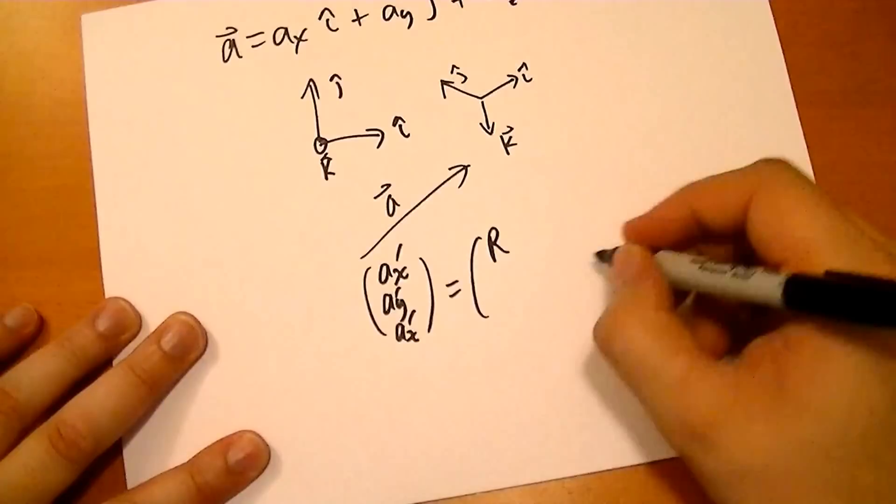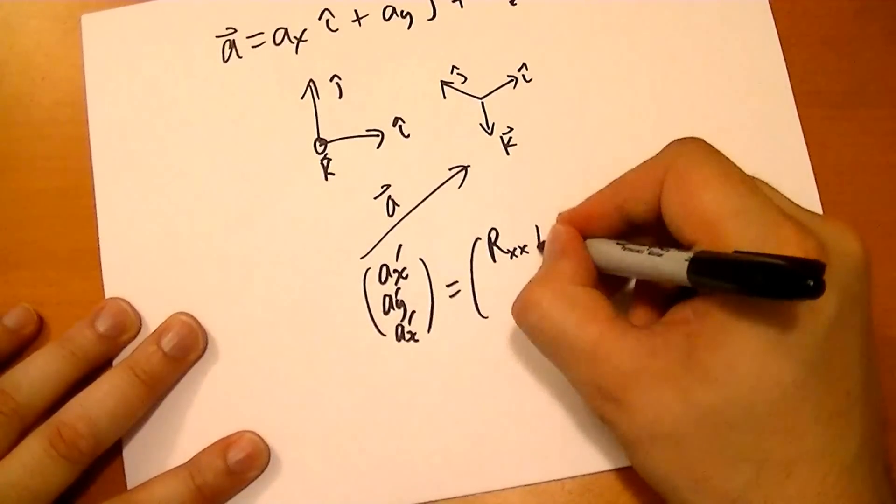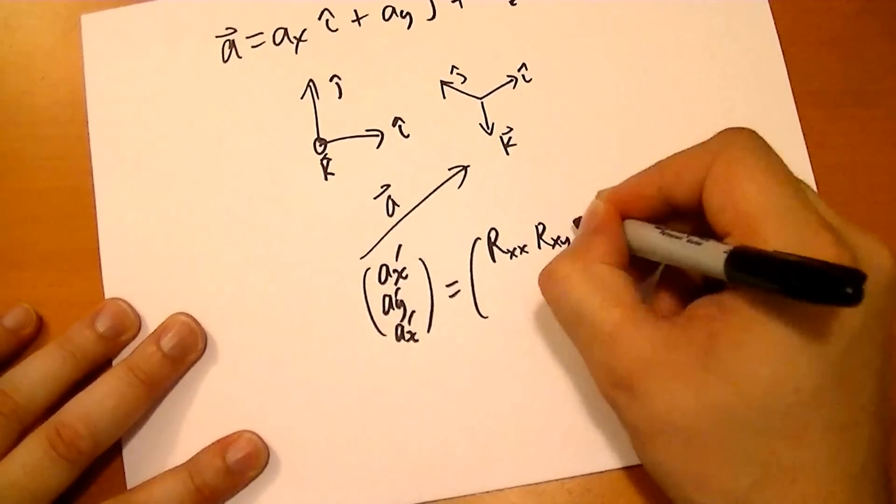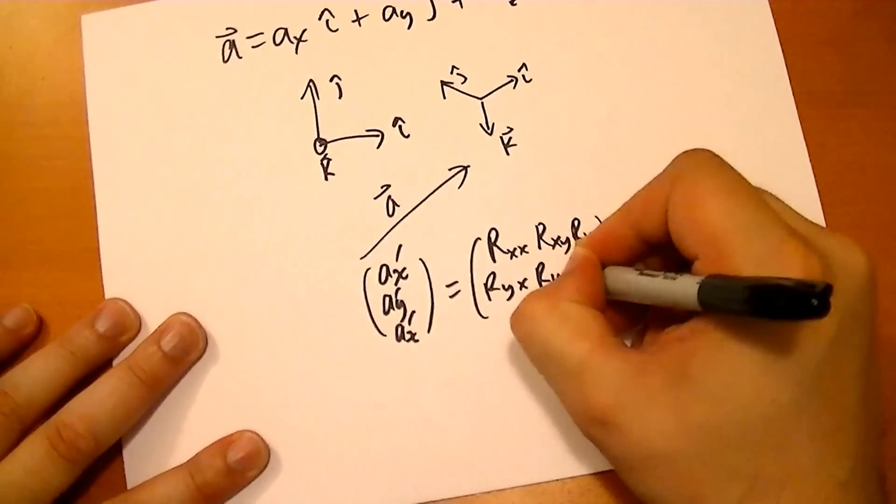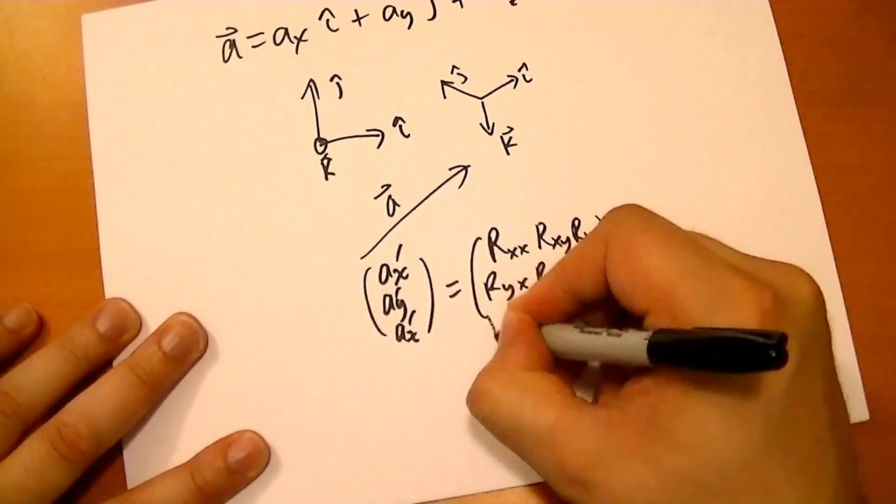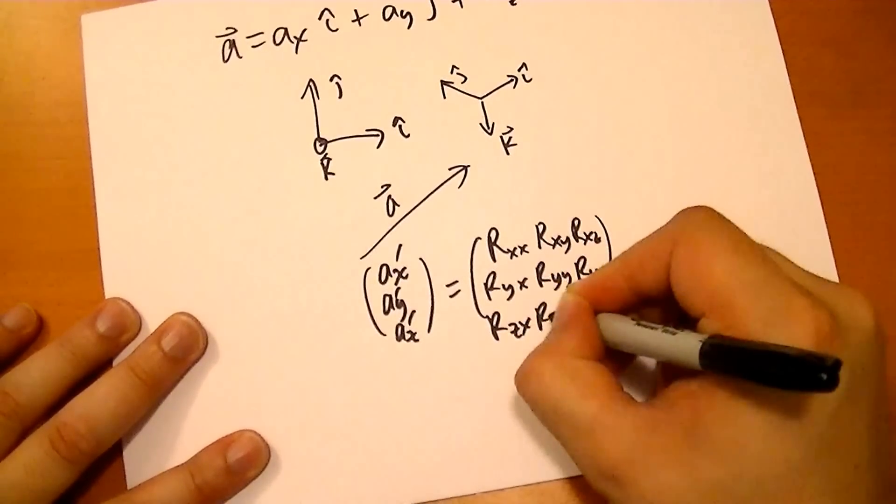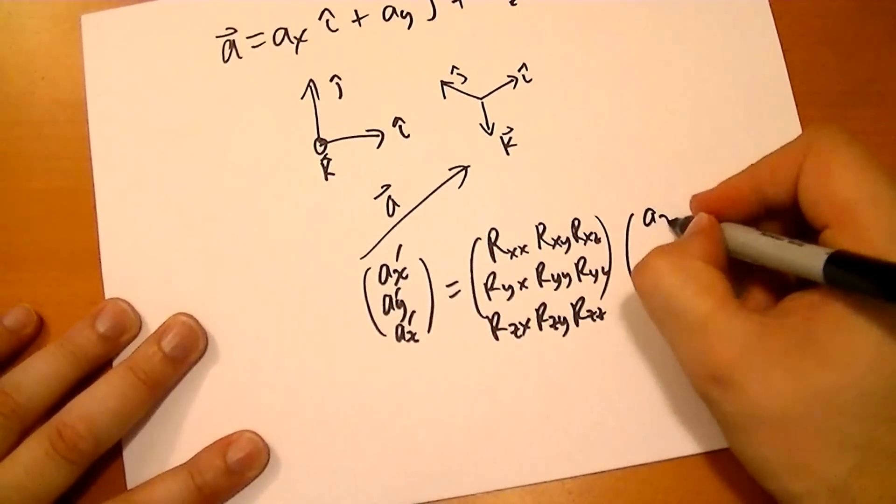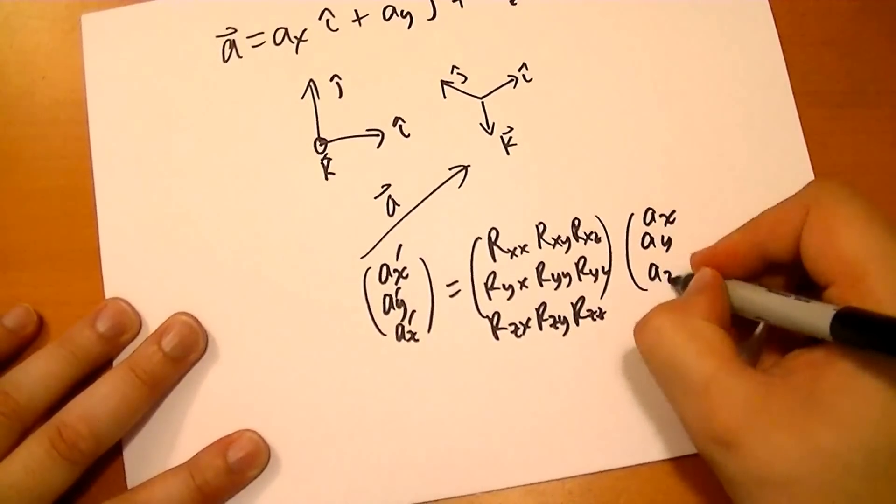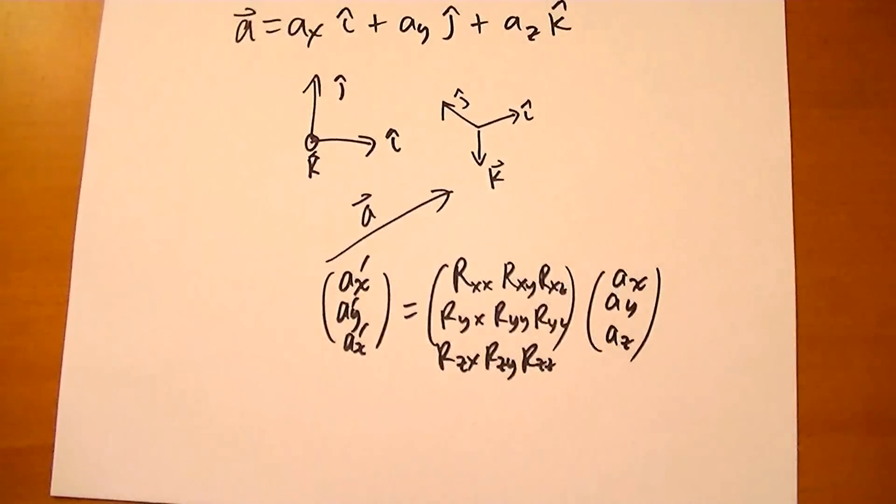Some rotation vector, rotation matrix, you have x-x, x-y, and the z's. And times your ax, ay, and az components. And that's how you rotate the components into the new system.